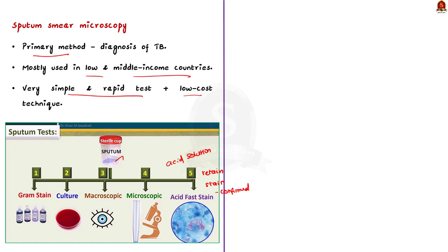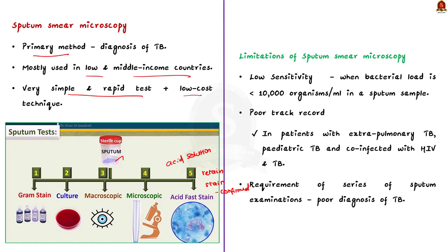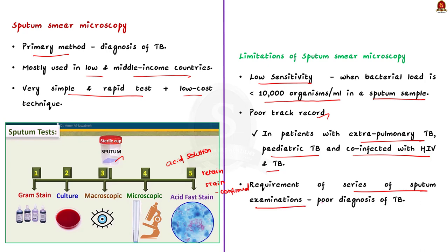However, the sputum smear microscopy method has significant limitations. First, sensitivity is compromised when the bacterial load is less than 10,000 organisms per ml in a sputum sample. Second, it has a poor track record in extra-pulmonary tuberculosis, pediatric tuberculosis, and in patients co-infected with HIV and TB. Finally, because a series of sputum examinations is required, some patients do not return for repeated examinations, leading to poor diagnosis.